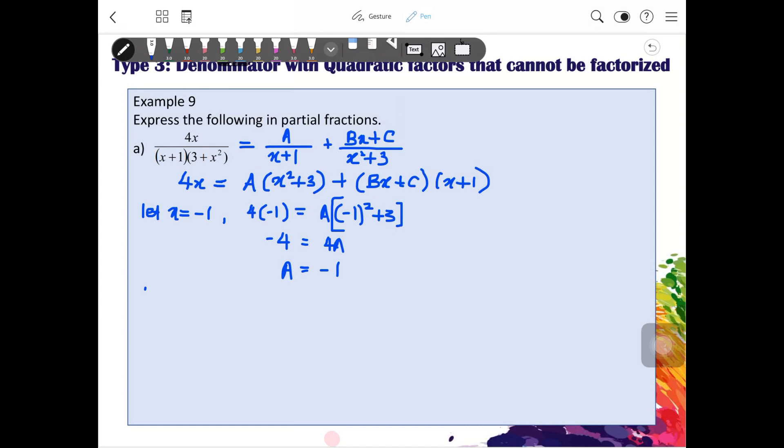Next we will let x to be 0. So we will have 4 times 0. Why I choose 0? Because we can let x to be any value and we are running out of root here. And then our A is negative 1.